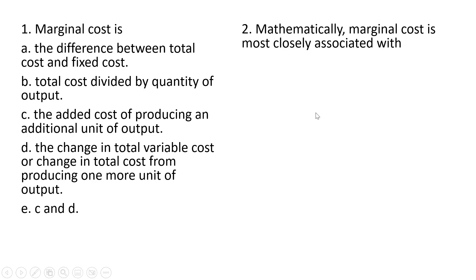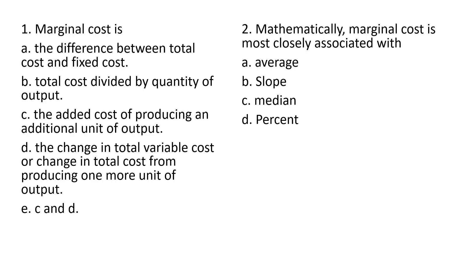Mathematically, marginal cost is most closely associated with average, slope, median, or percent. The correct answer here is slope, answer B. So marginal cost is a slope concept — it shows the change in one variable from a one-unit change in another variable.